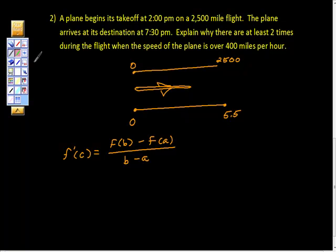I'm going to translate that a little bit. f(b), the final destination, is 2,500 miles, minus the initial position, which is zero, all over 5.5 minus zero. With your calculator, you'll find that our airplane, at some point, is going about 454 miles per hour.